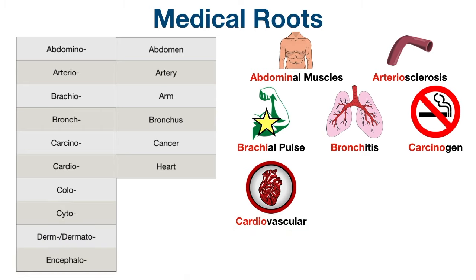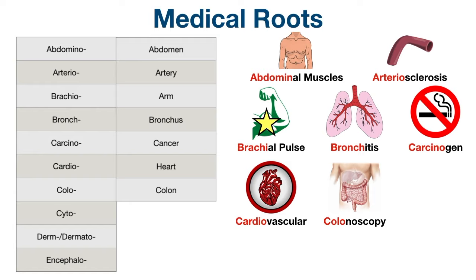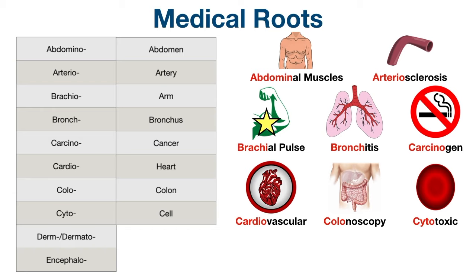The next root is colo, which refers to colon. It's another easy one to remember since colo and colon sound the same. You can think of colonoscopy, which is a procedure performed to examine the colon. Cyto is the next root, and it means cell. An example medical term would be cytotoxic — if something is cytotoxic, it means it's toxic to living cells.